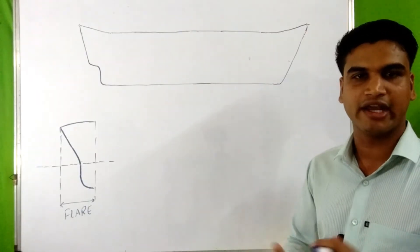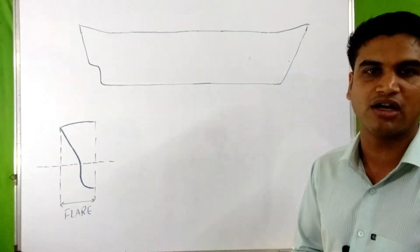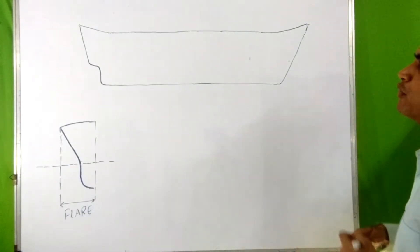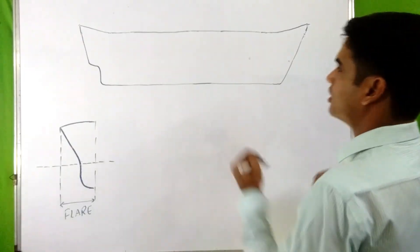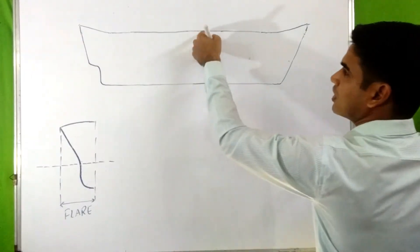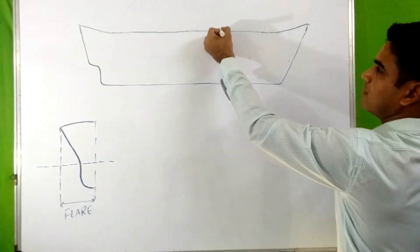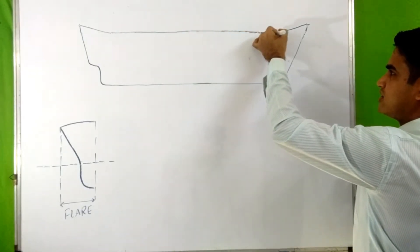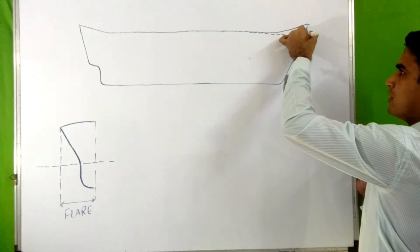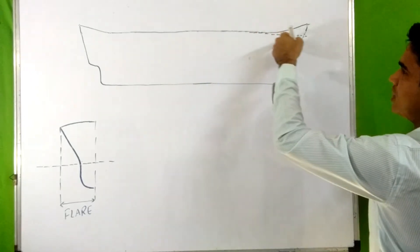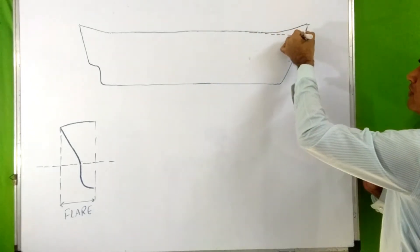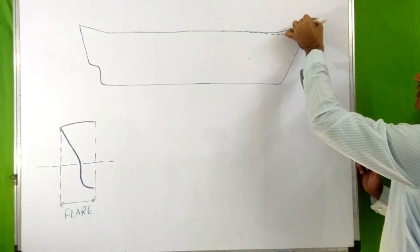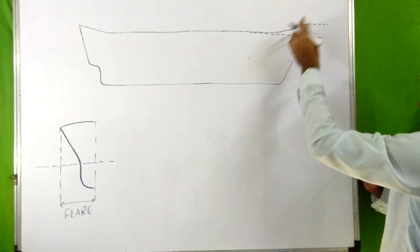Next is shear. Shear is the rise of the deck in the forward and aft part of the deck plating above the parallel line drawn from the center of the ship to meet the stem. You can see this rise of deck plating at the forward end.